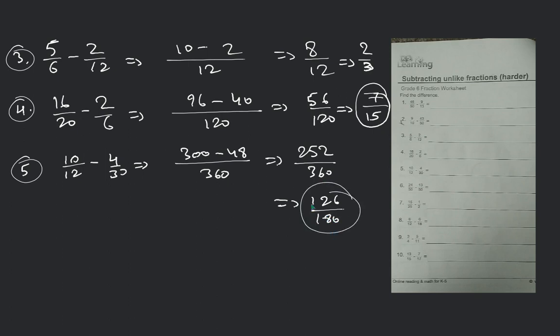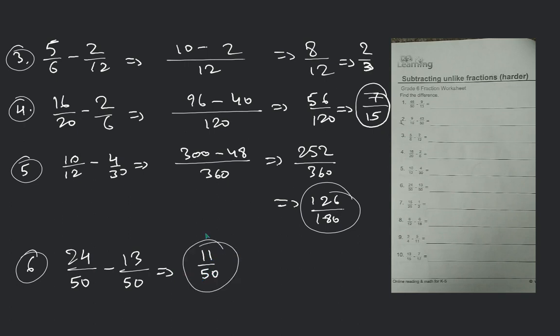Number 6 question: 24 by 15 minus 13 by 15. See, the denominators are the same. We just subtract the numerators: 24 minus 13 = 11. You will get 11 by 15. 6th question is over.